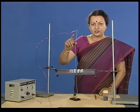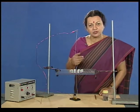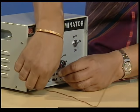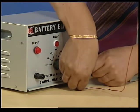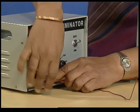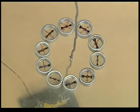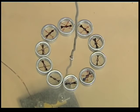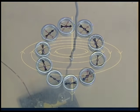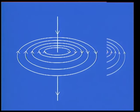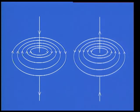Now let us reverse the direction of current through the wire and see what happens to the compass needles. If we compare this pattern with the earlier one, when we reverse the current in the wire, the direction of the magnetic field also reverses.